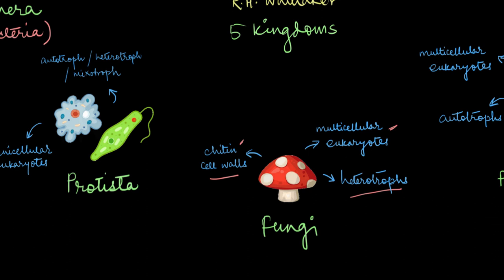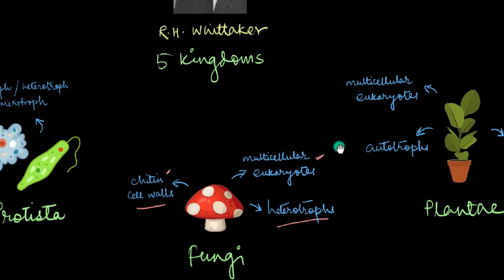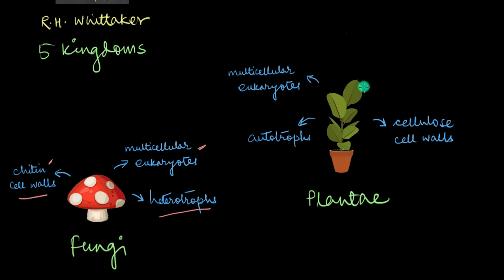The fourth kingdom is Plantae, which is the kingdom of plants. All plants are exclusively photosynthetic multicellular eukaryotes. As we have already mentioned once before, they also have cell walls and these cell walls are made up of cellulose. And since they are all photosynthetic, all plants are strict autotrophs.